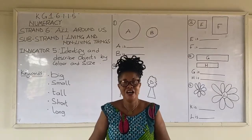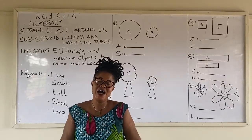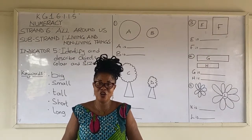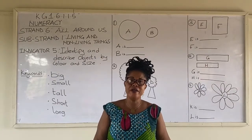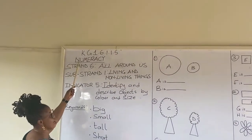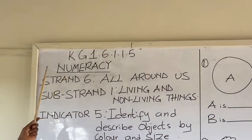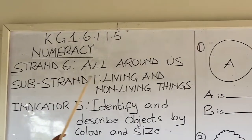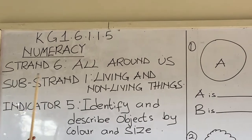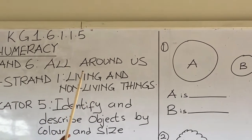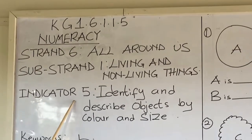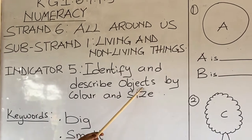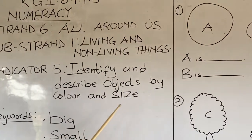Hello, welcome to Leto Smile's Kindergarten 1 Online Tutorials. Today's tutorial is on numeracy, taken from Strand 6, All Around Us, Strand 1, Living and Non-Living Things. Indicator 5: identify and describe objects by color and size.